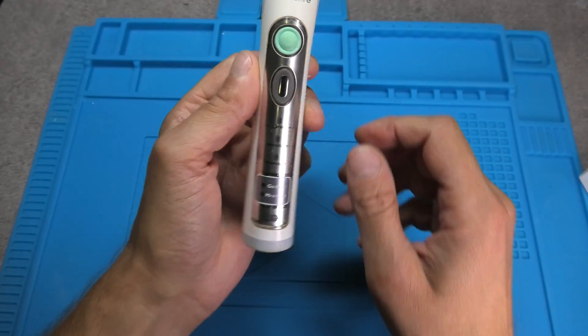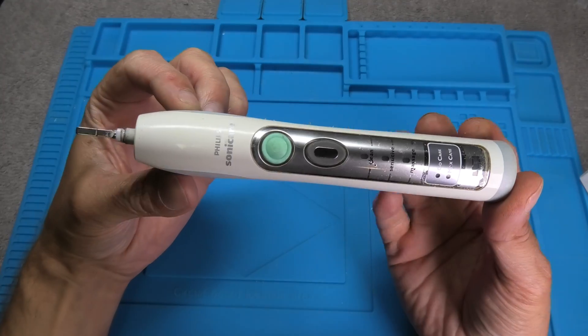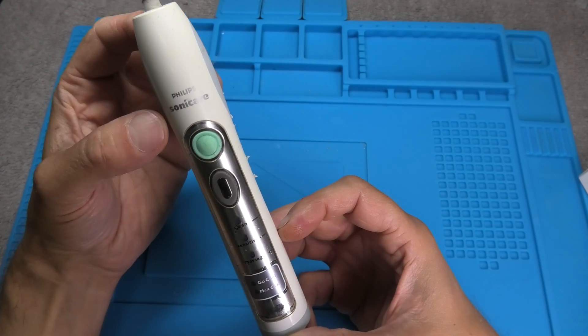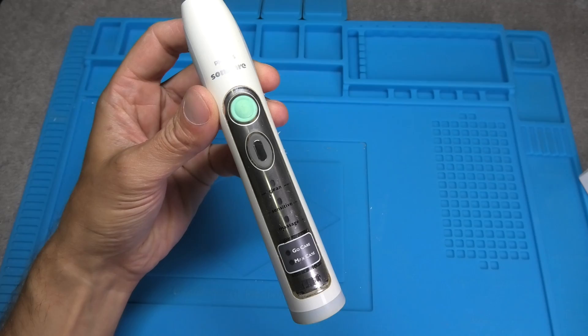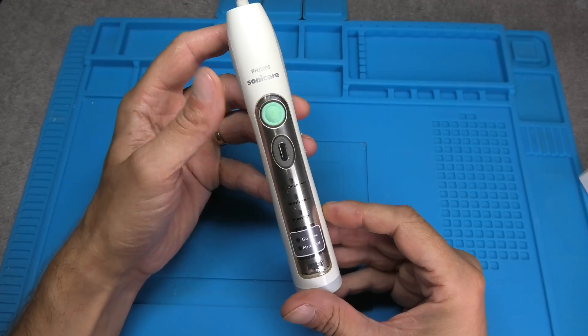Hey guys, today I want to show you how to replace the battery on one of these Philips Sonicare electric toothbrushes. The process is pretty simple, it can be done in about 15 minutes and the only tool that you really need is a soldering iron.